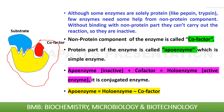So, apoenzyme — that means only the protein part of the enzyme — is equal to the holoenzyme minus the co-factor. In other words, the whole enzyme minus the co-factor gives you the apoenzyme.